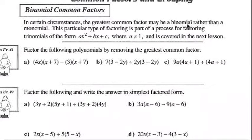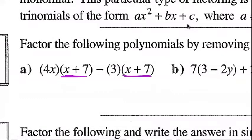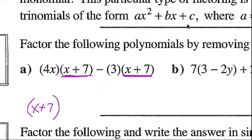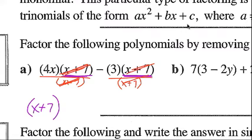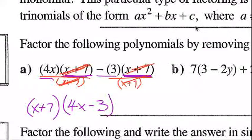Factor the following polynomials by removing the greatest common factor. In this case there's not a monomial that is a greatest common factor, but you can see that (x + 7) is common between both terms, which means (x + 7) can be factored out. When we're factoring out, we divide each term by (x + 7). The full binomial in brackets will cancel — you can't cancel just part of a binomial — leaving me with 4x minus 3.